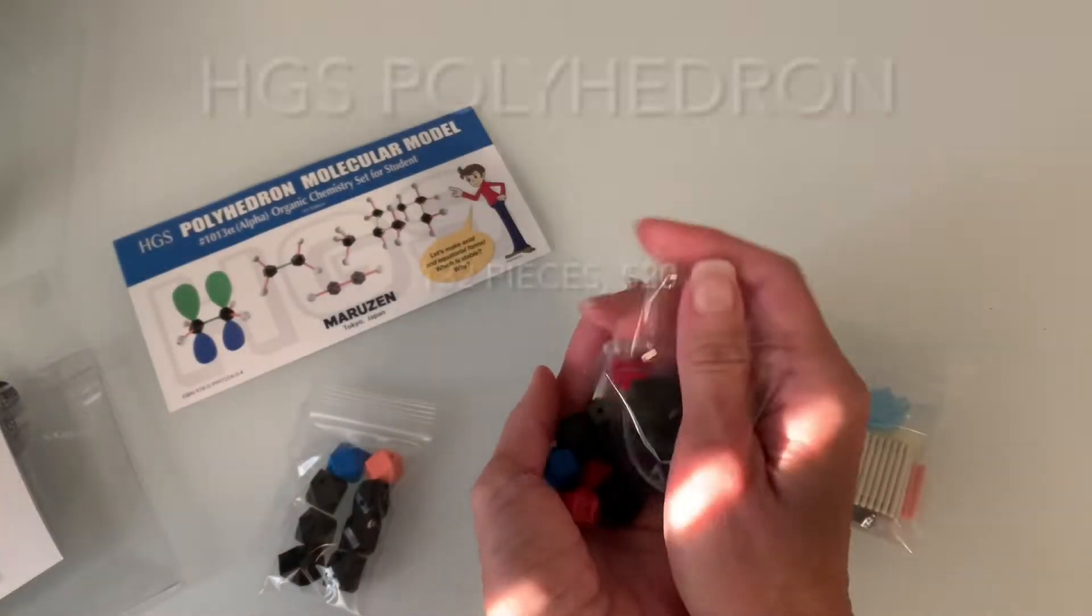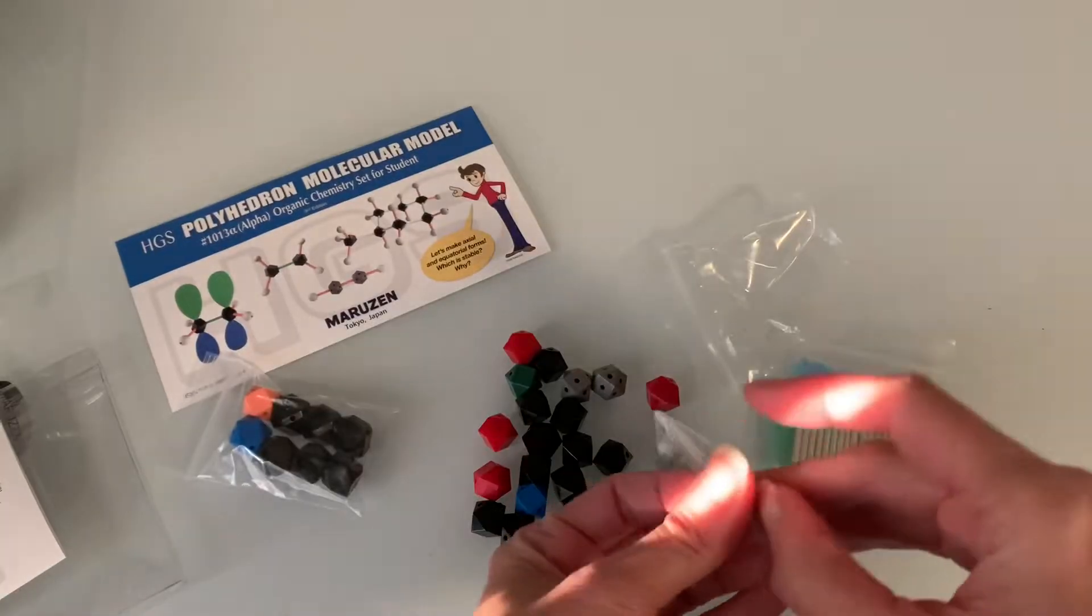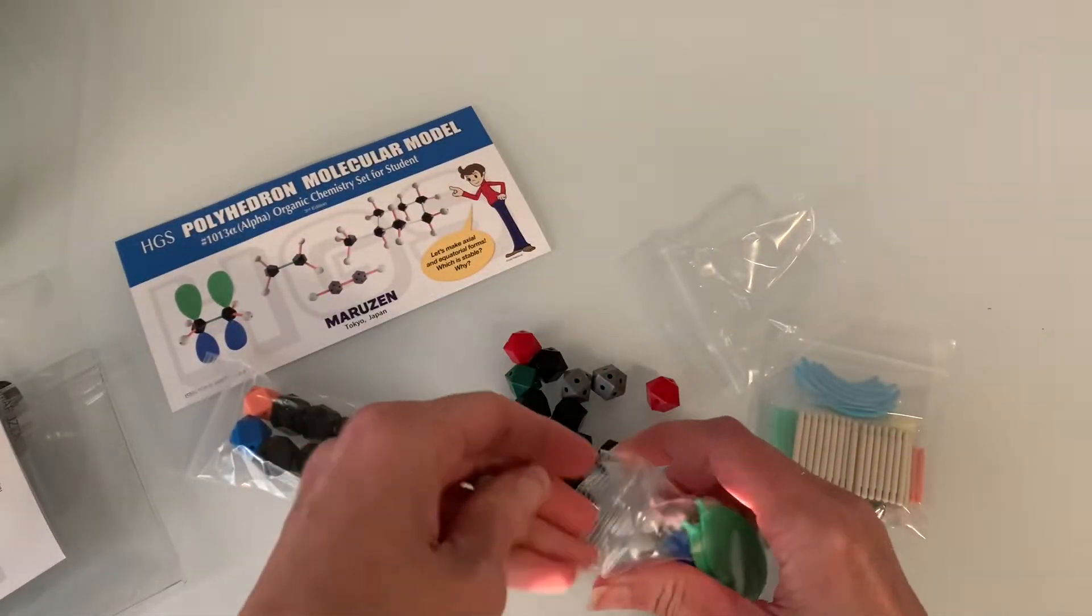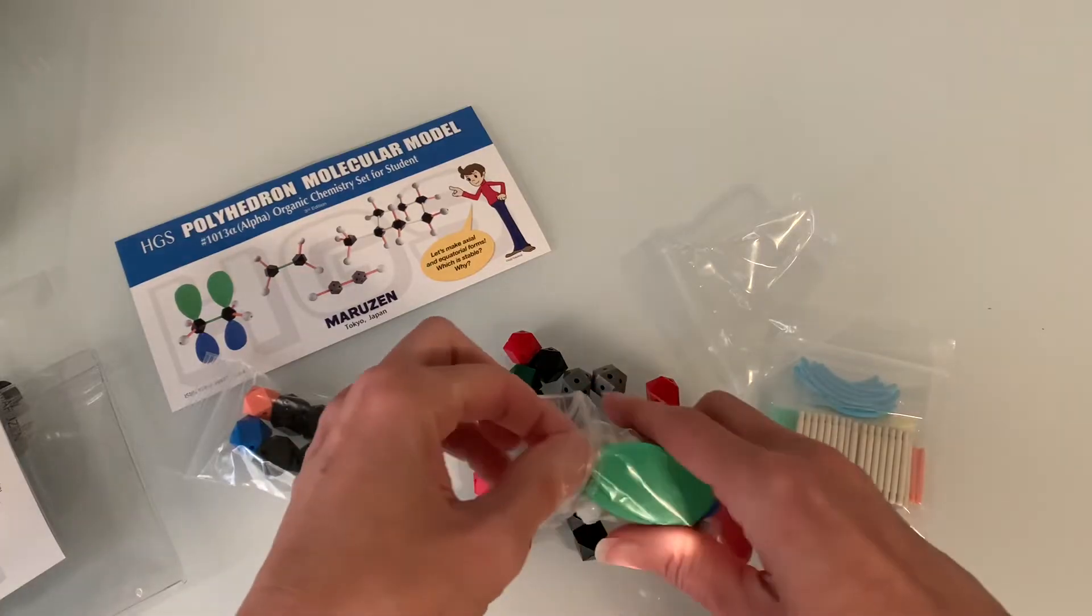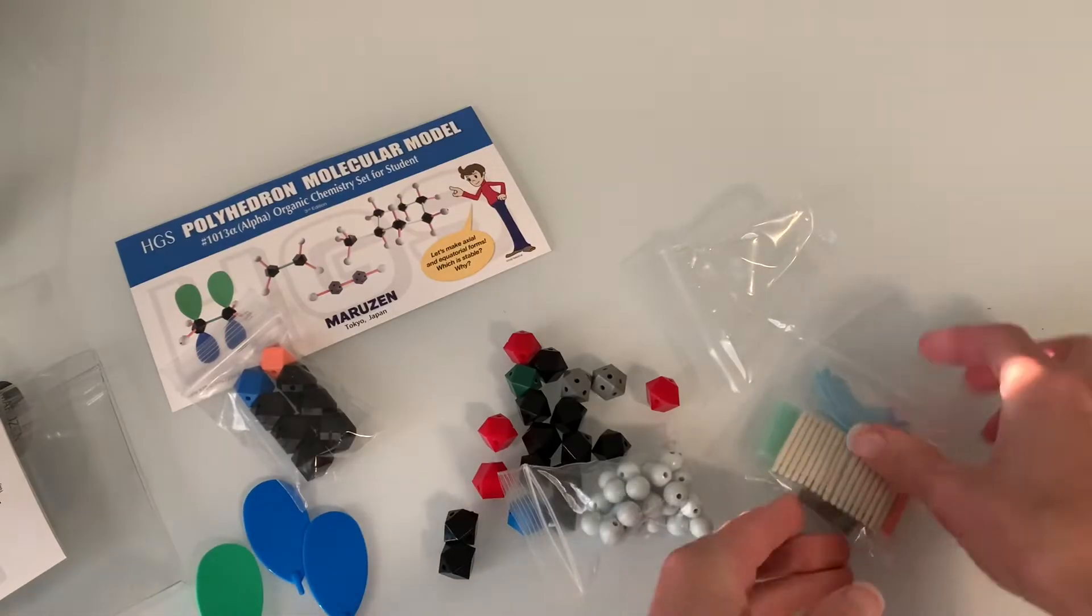Last I'm going to show you a set by HGS Polyhedron. This is a 132 piece set. At the time of the video it was $20 on Amazon. In addition to atoms and bonds, this set also includes these flat oval shaped things that you could use to indicate a lone pair on a central atom which is kind of cool.